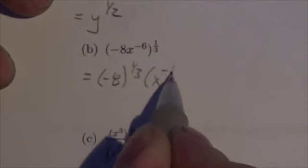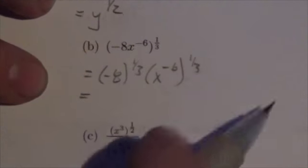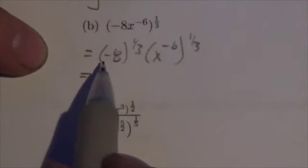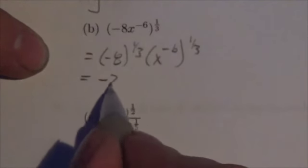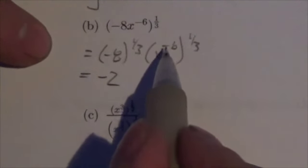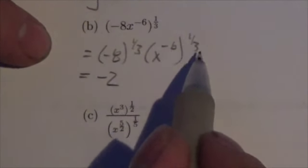And remember what that power means when it's to the 1 third. That means a cube root. Well, the cube root of negative 8 is negative 2, because it's an odd root index. I'm going to preserve the negative. And now this becomes x to the negative 6 times 1 third. Well, now this is a power of a power, and now I would multiply those together.